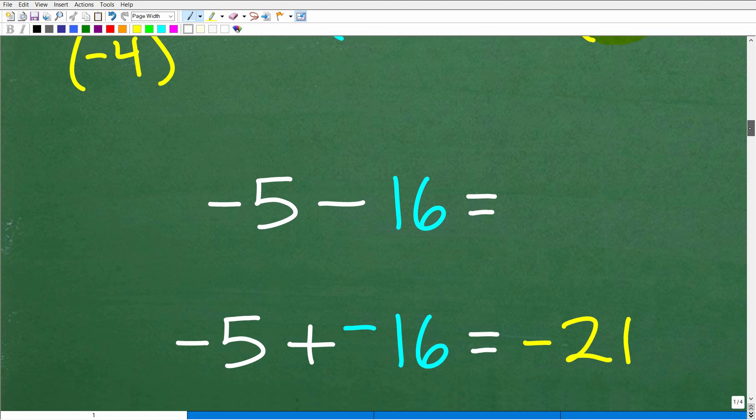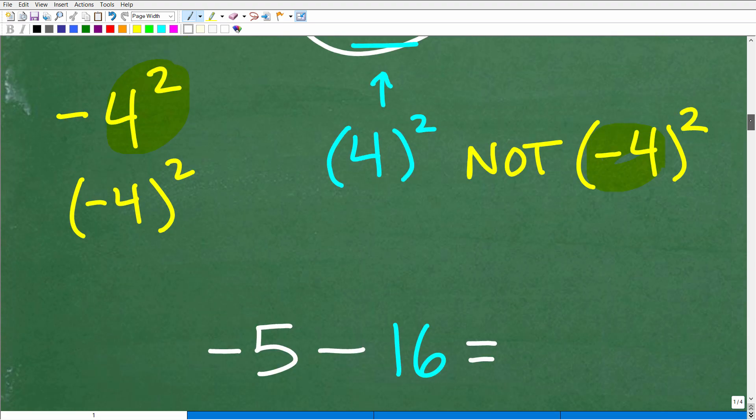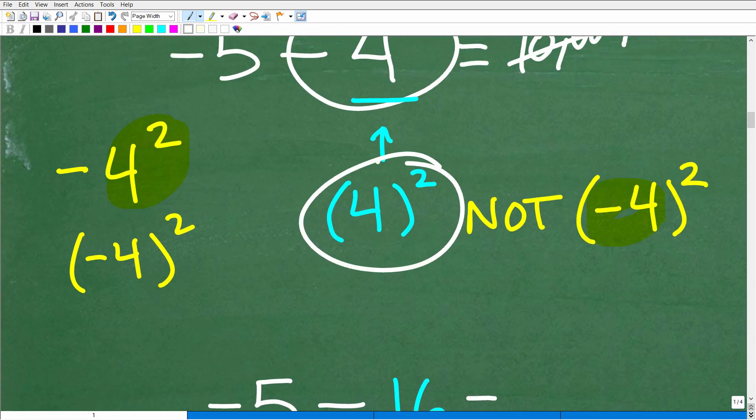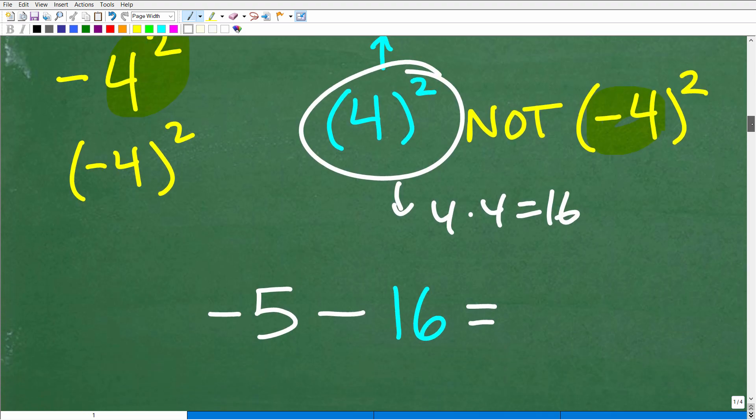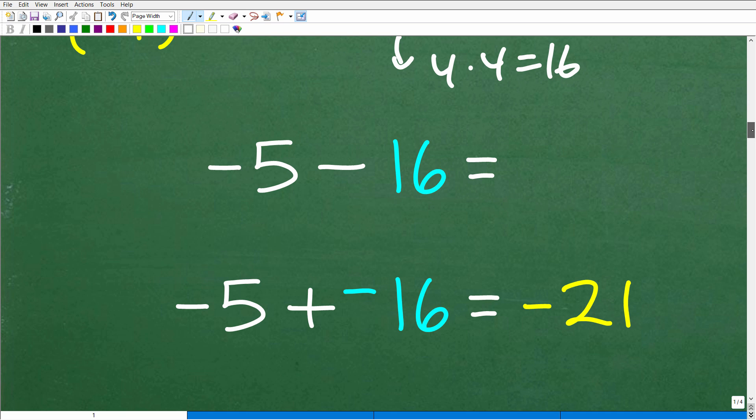All right, so let's go ahead and take a look at the answer now. So negative 4 squared, excuse me, let me kind of go back here, is what? Well, that's positive 4 times positive 4, which, of course, is 16. So negative 5 minus 4 squared is going to be negative 5 minus 16. And now we are kind of home free to figure this out. So negative 5 minus 16, if you are up to speed on your positive and negative number rules, this is the same thing as negative 5 plus negative 16. Of course, negative 5 plus negative 16 is negative 21.